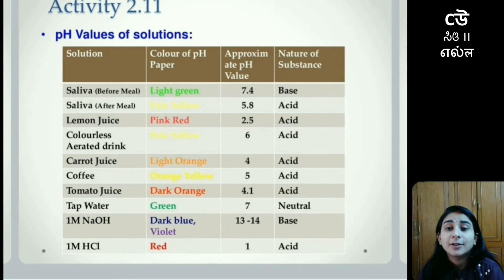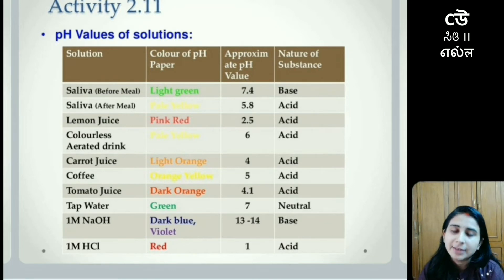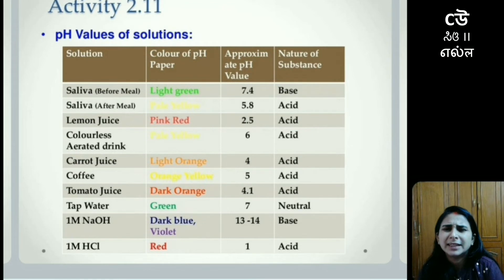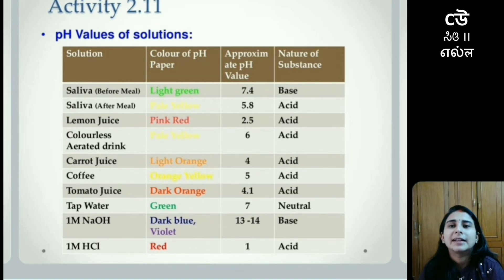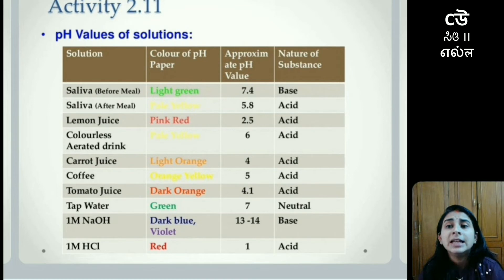Tomato juice is dark orange with pH 4.1, acidic in nature. Tap water shows a green pH paper color with pH 7, meaning it is neutral. One mole of NaOH gives a dark blue or violet pH paper color with pH between 13 to 14, meaning it is basic. One mole of hydrochloric acid is a strong acid with pH 1, red in color and acidic in nature.